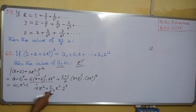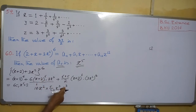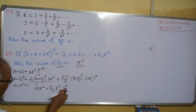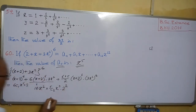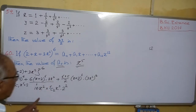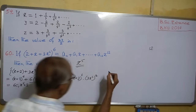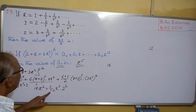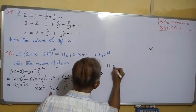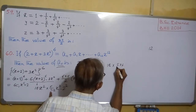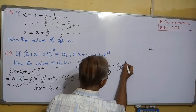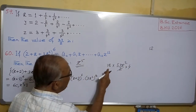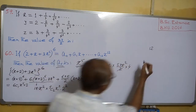So it will be 5C2·x^(5−2)·2², giving 5C2·x³·2². The coefficient from this part is 18 × 5C2 × 4, where 5C2 = 10, so 18 × 10 × 4 = 720.